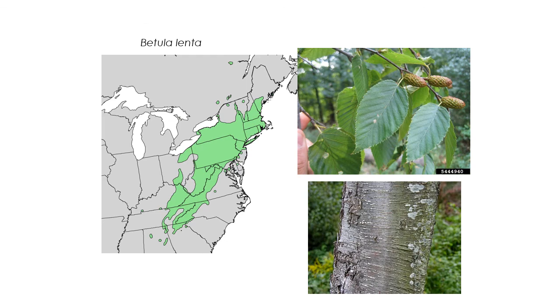Also in the temperate zone, we have birch. You'll find birch especially in the Northeast, down the axis of the Appalachian Mountains at higher elevations.